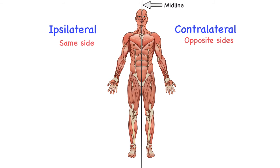These terms are primarily used when referring to the brain and how the brain interacts with the body. This is because some nerves can come from the left side of the brain and go into the left side of the body, but sometimes those nerves come from one side of the body and go into the opposite side, and vice versa. They can sometimes have effects on opposite sides or the same side of the body.